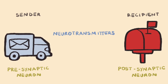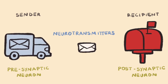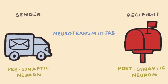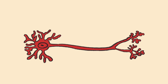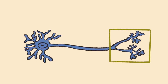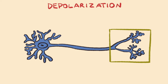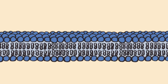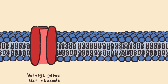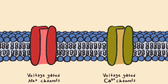We are going to focus on a presynaptic neuron meeting with a postsynaptic neuron. The first step that occurs upon action potentials arriving to the axon terminals of a neuron is the rapid depolarization of the area. The depolarization causes voltage-gated sodium channels and voltage-gated calcium channels to open.